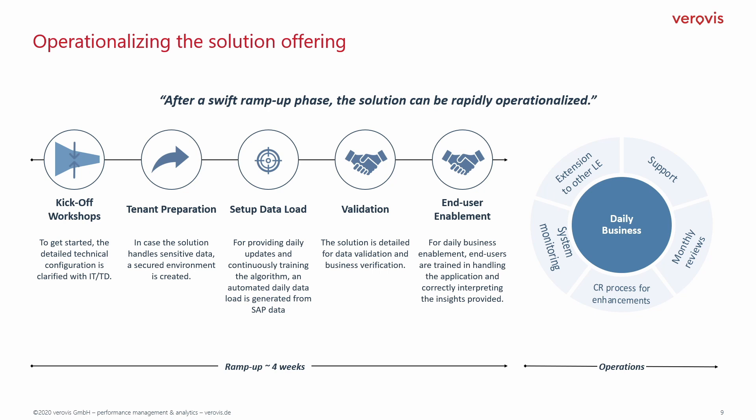Afterwards, we start the tenant preparation and set up the initial data load from the SAP ERP system. To assure that the loaded data meets the necessary quality standards, we conduct data validation sessions with business. When all quality gates are passed, the jobs for recurring data loads are set up. The last step of the ramp-up phase is the end-user enablement. We train the users in handling the application and correctly interpreting the results.